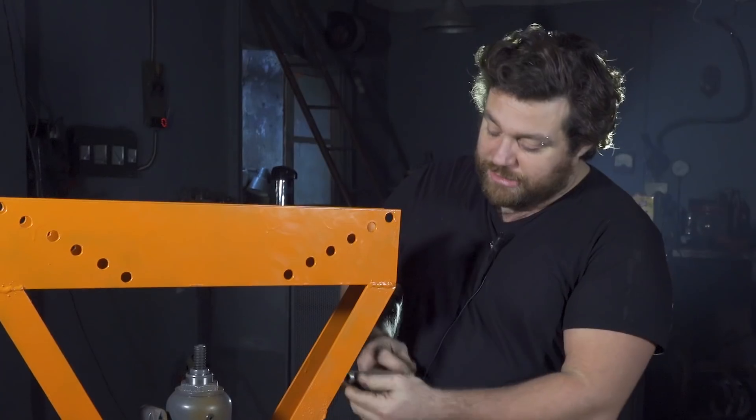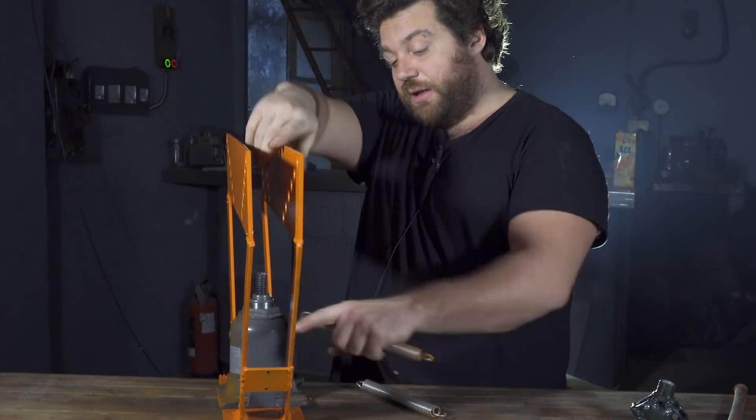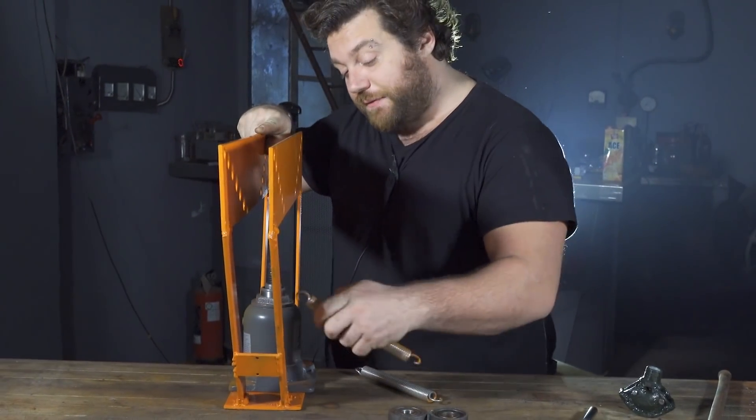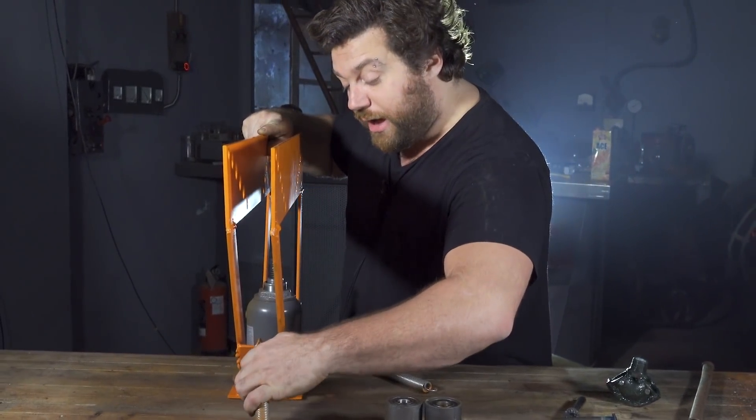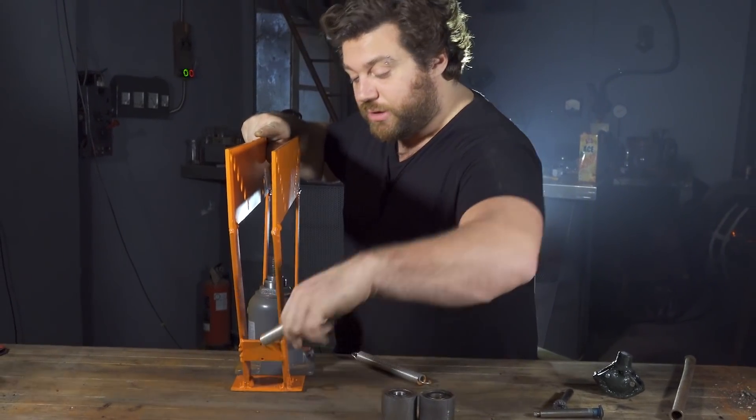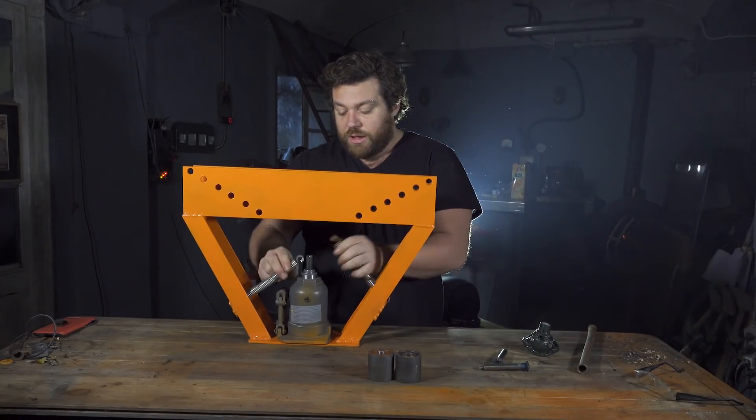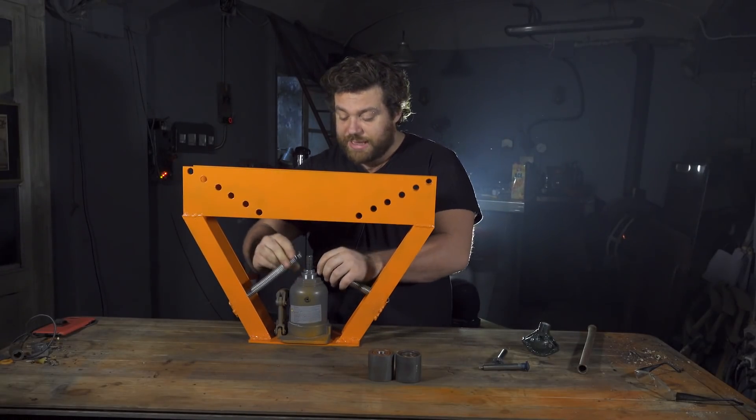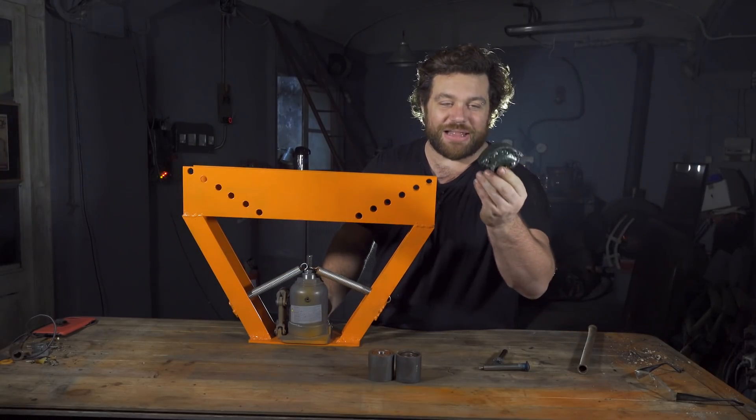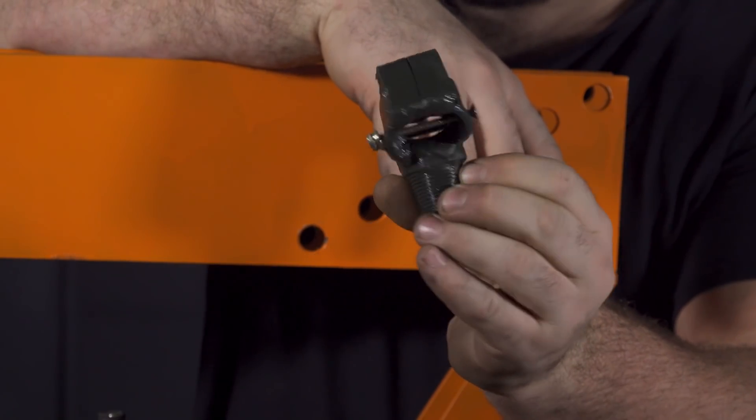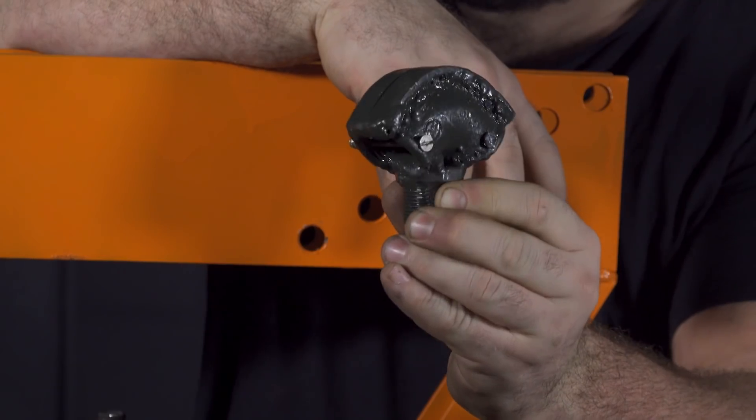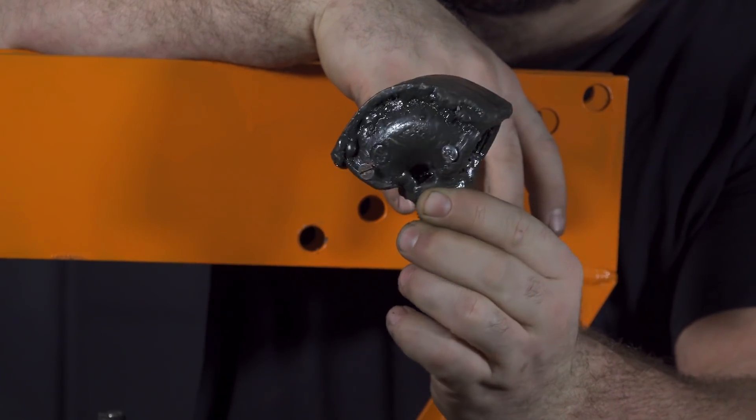The jack itself has a huge problem I can solve using these two big springs. The jack cannot go down by itself once fully lifted up. Once fully extended, it can't go down even if I open the small valve. I need to put some force on top.